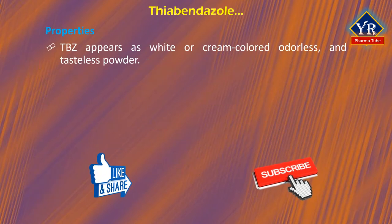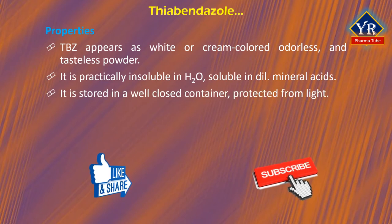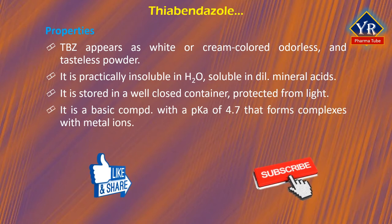Thiobendazole appears as a white or cream-colored, odorless and tasteless powder. It is practically insoluble in water and soluble in dilute mineral acids. It is stored in a well-closed container protected from light. It is a basic compound with a pKa of 4.7 that forms complexes with metal ions. It is formulated as a dust, flowable powder, or wettable powder for use as a systemic fungicide and anthelmintic.